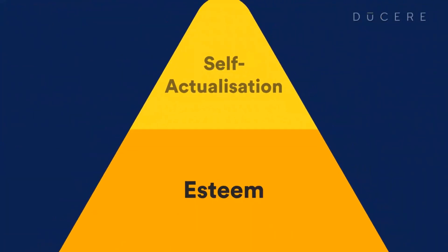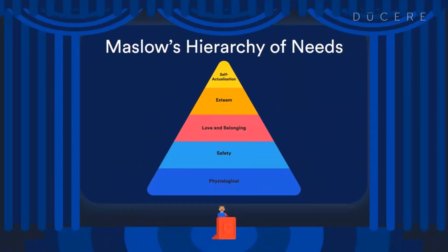While even Maslow stated that these hierarchies were interrelated rather than sharply separated, Maslow's pyramid nevertheless provides insight into both our own motivations and of those around us.